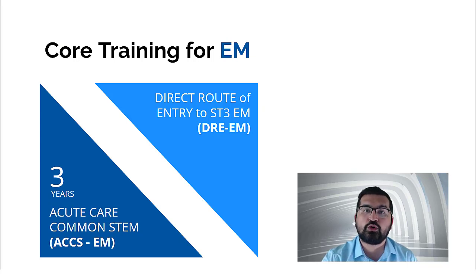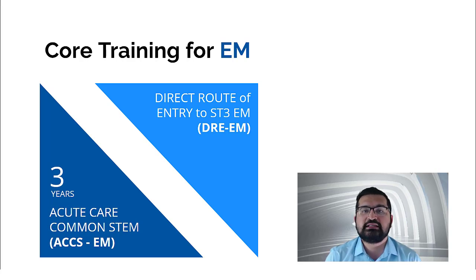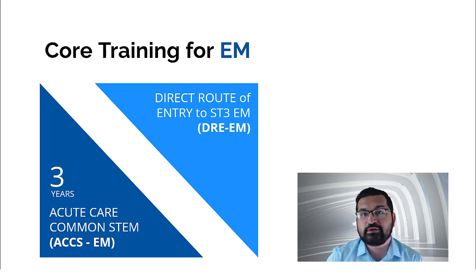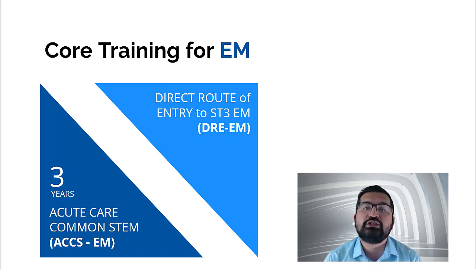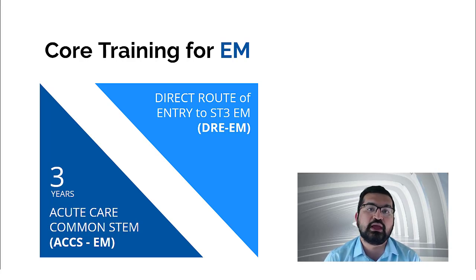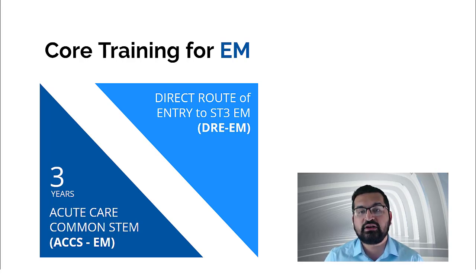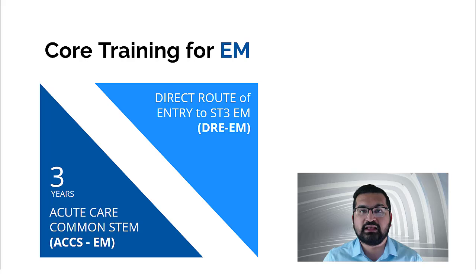Now let's go into a bit more detail about the core training of emergency medicine. Core training is called ACCS-EM — ACCS stands for Acute Care Common Stem. You can join ACCS-EM as a core training separate from higher specialty training, or you can join ACCS-EM as part of a complete run-through training. This is determined when you join ACCS-EM and express your interest in the run-through process, so you don't need a separate recruitment round after CT3 — you'll progress to ST4 pending all competencies achieved in your ACCS-EM curriculum.